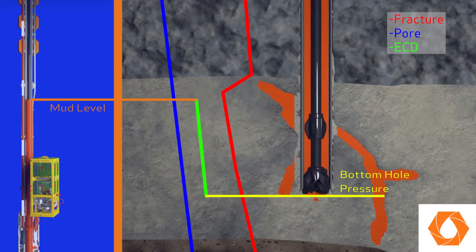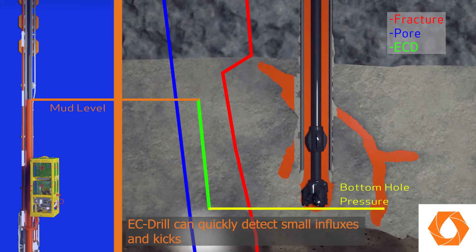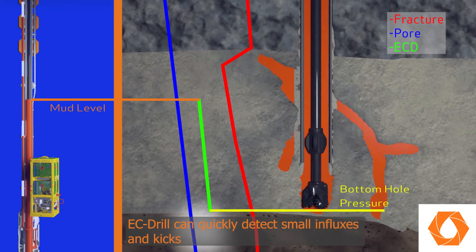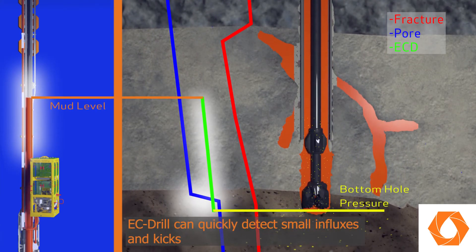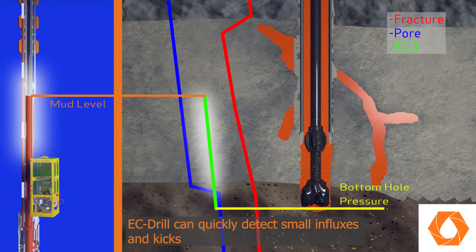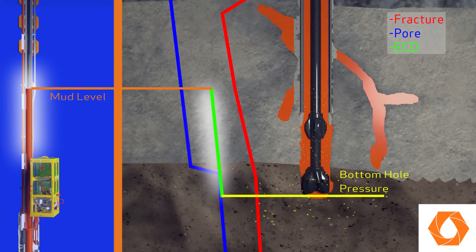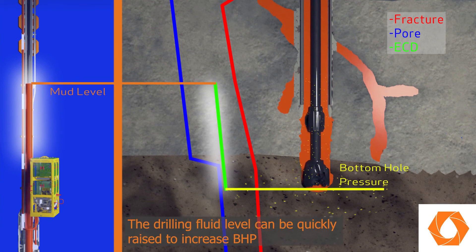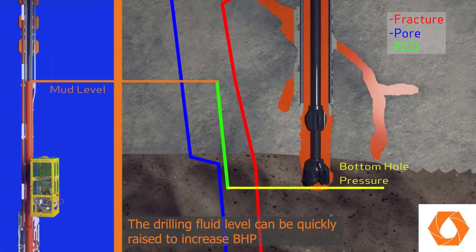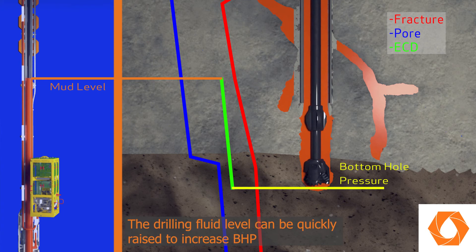EZDrill is finely tuned to detect influxes and kicks. Operators are able to detect and react quicker to influxes than with conventional methods. If an overpressure zone is encountered, the drilling fluid can be quickly raised to increase the bottom hole pressure to achieve overbalance pressure.